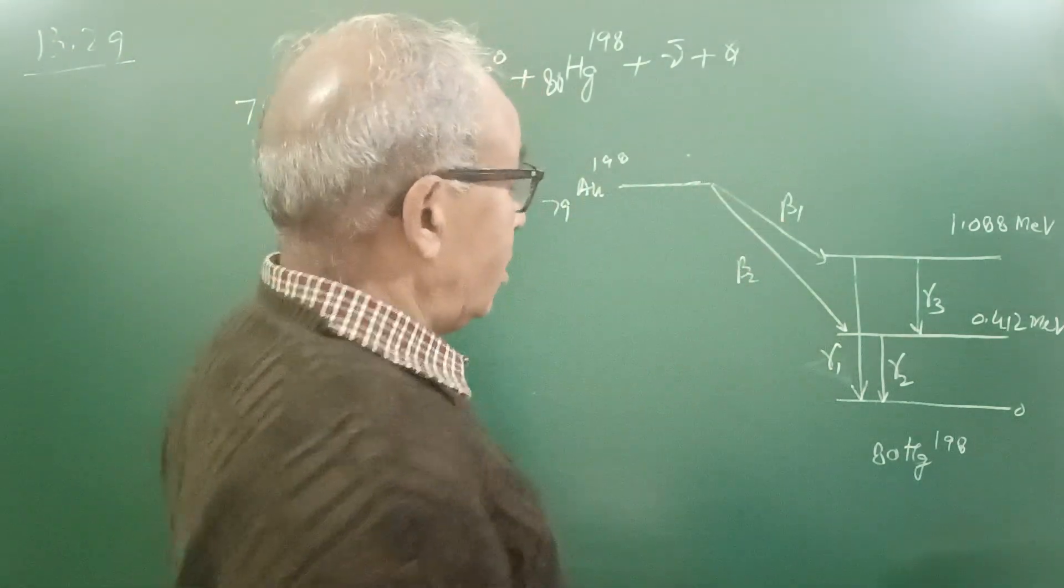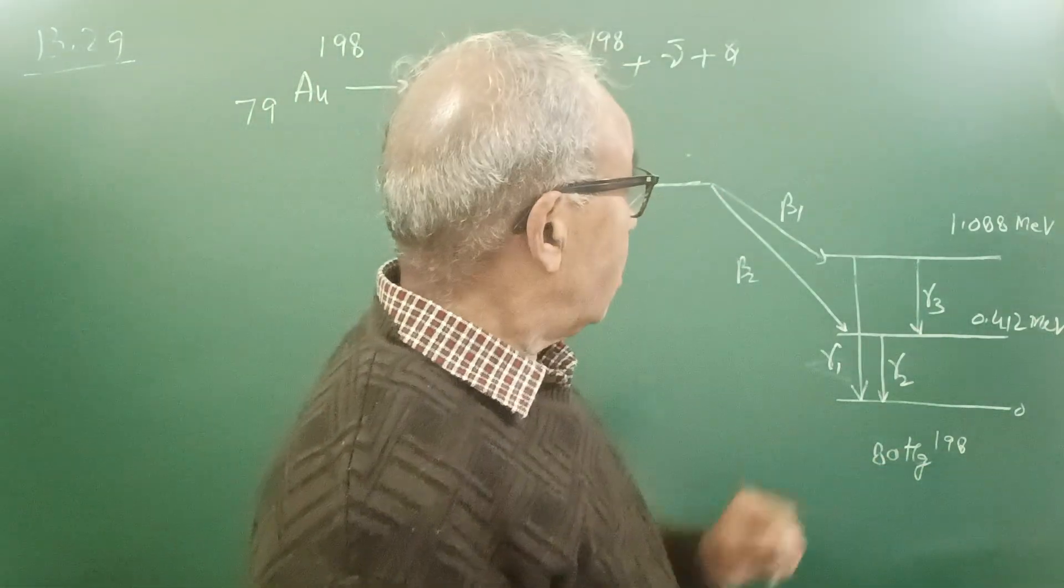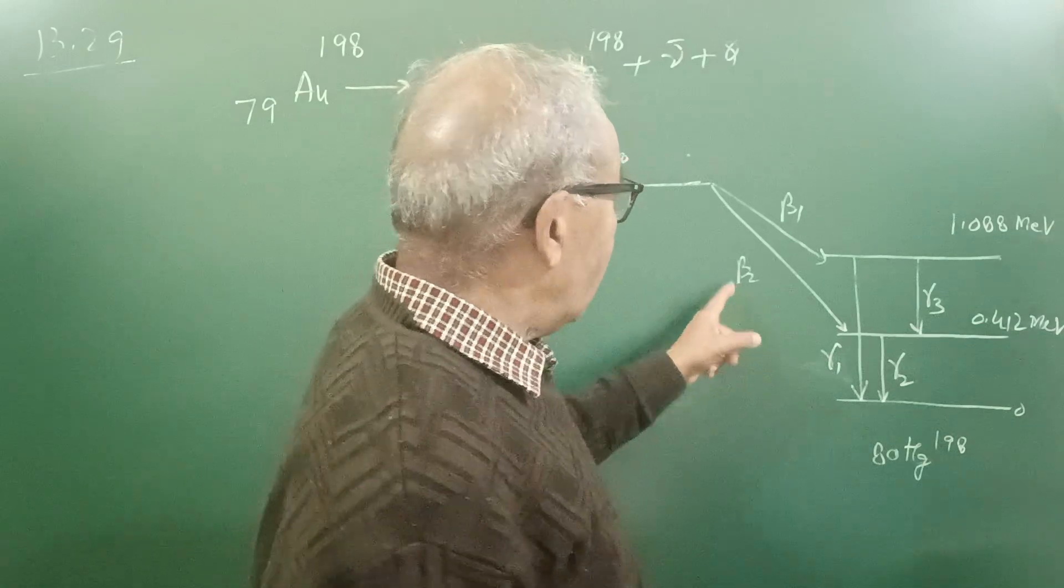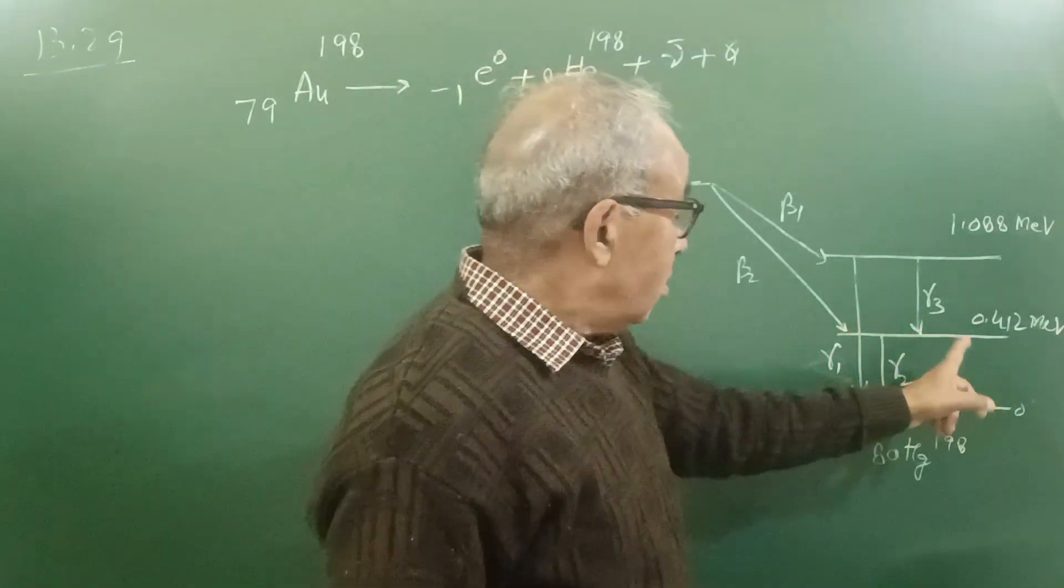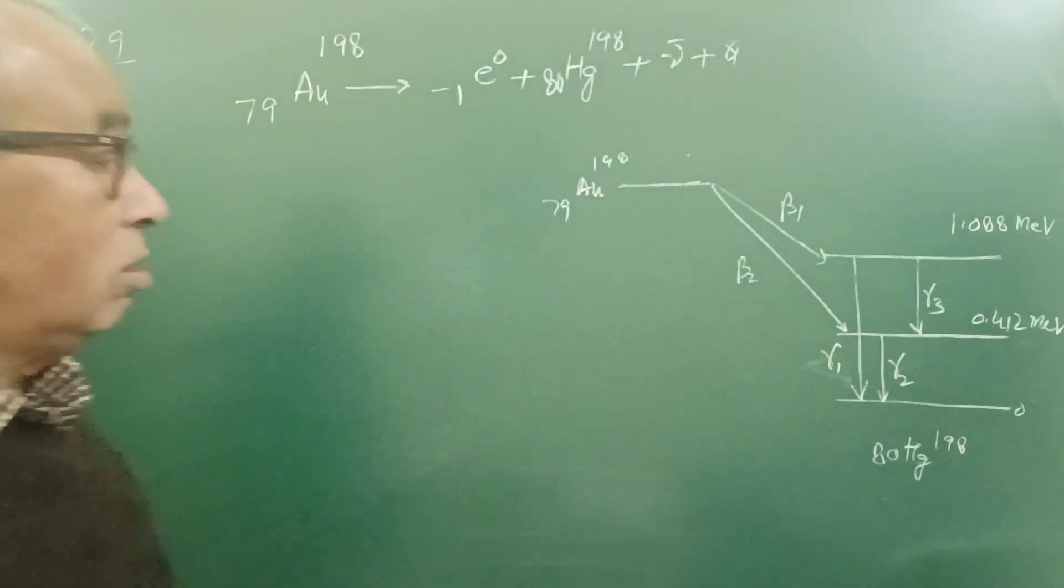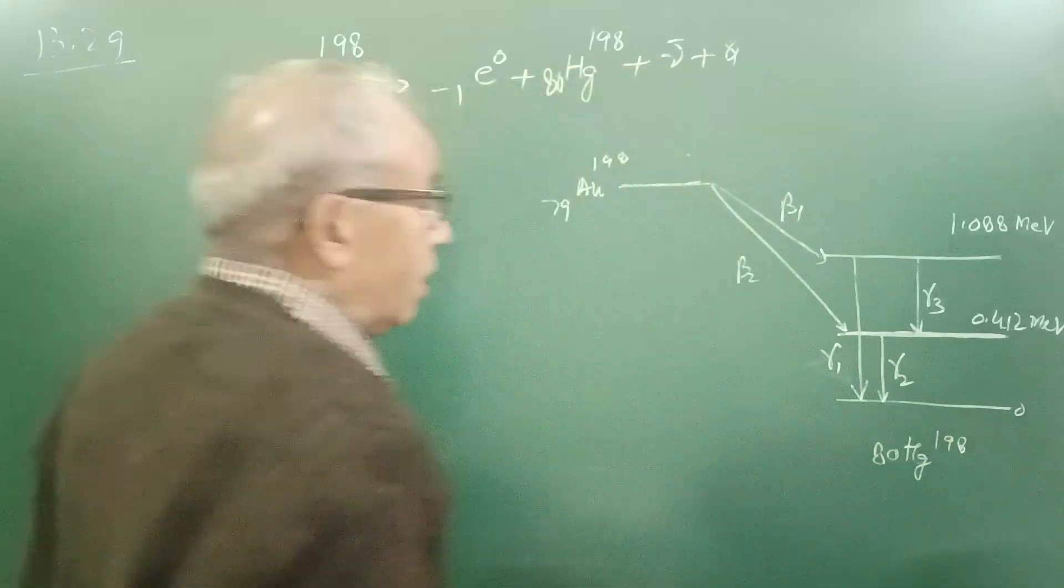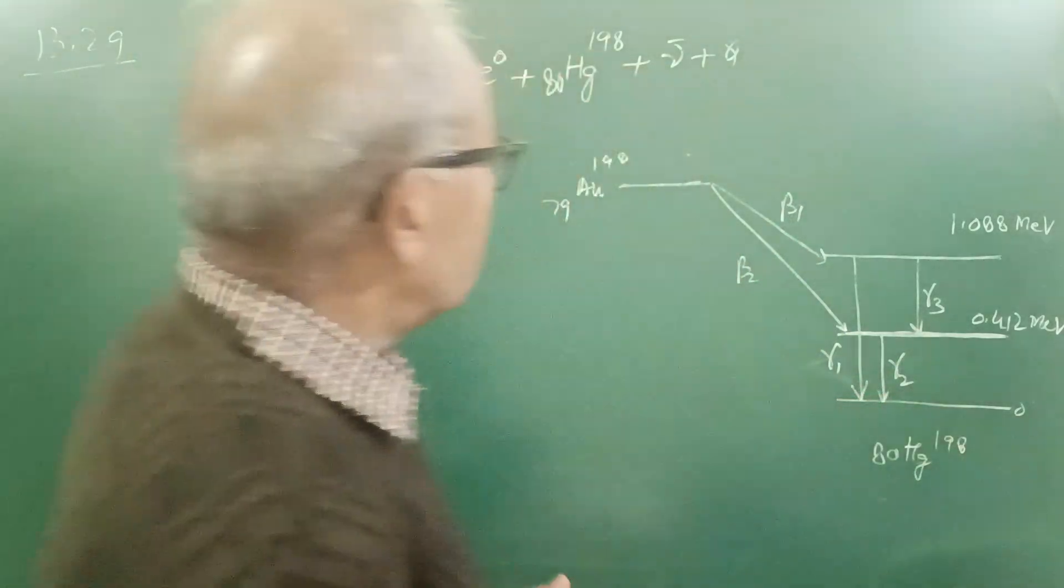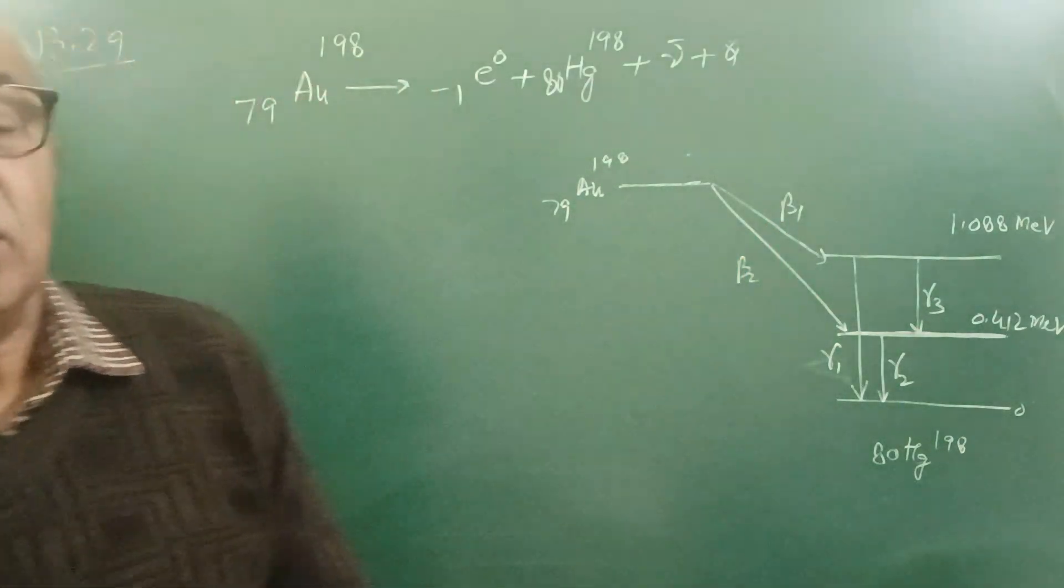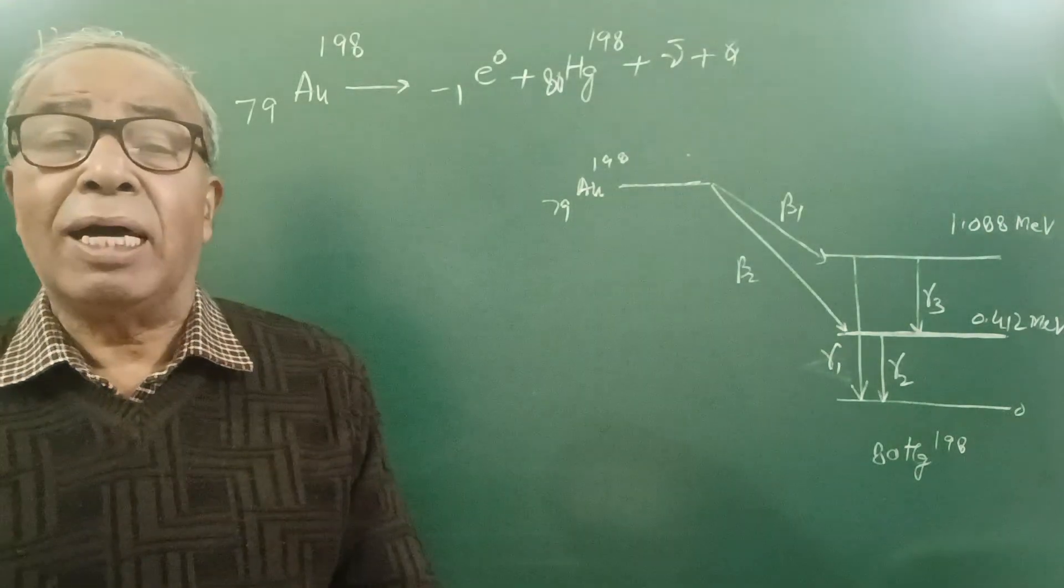If beta 1 is emitted, then the nucleus of mercury is left with energy of 1.088 MeV. If beta 2 is emitted, then the nucleus of mercury is left in a state of 0.412 MeV energy. So first of all you are asked here the energy of beta 1 and beta 2. The question is just an illustration and it will explain how gamma rays are emitted.